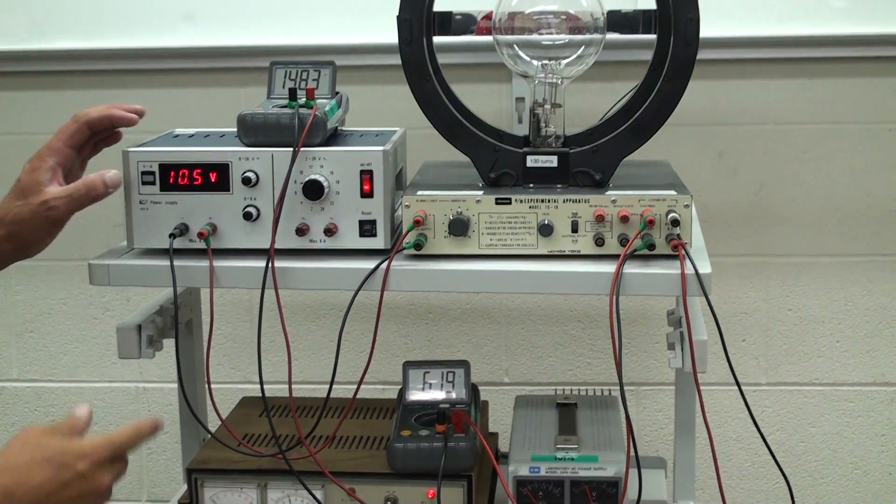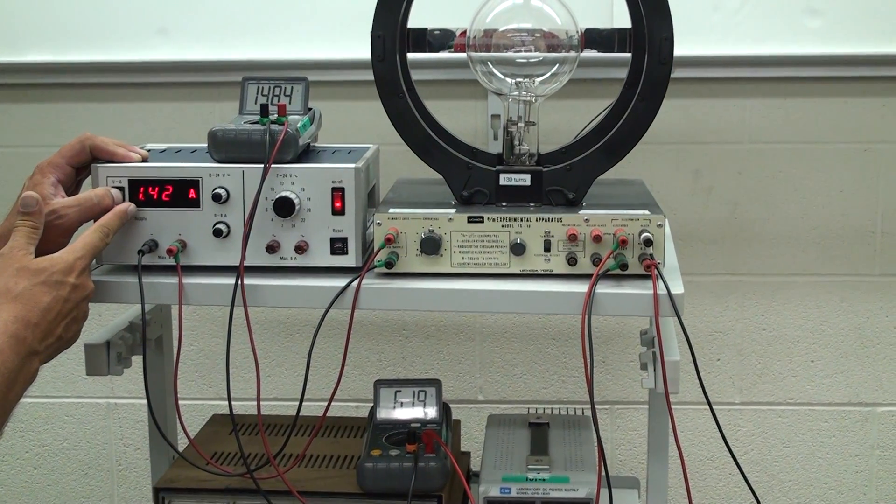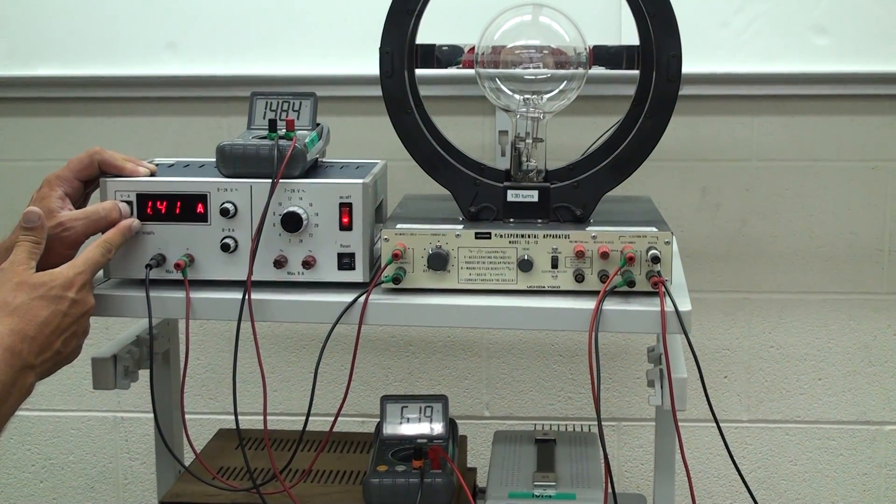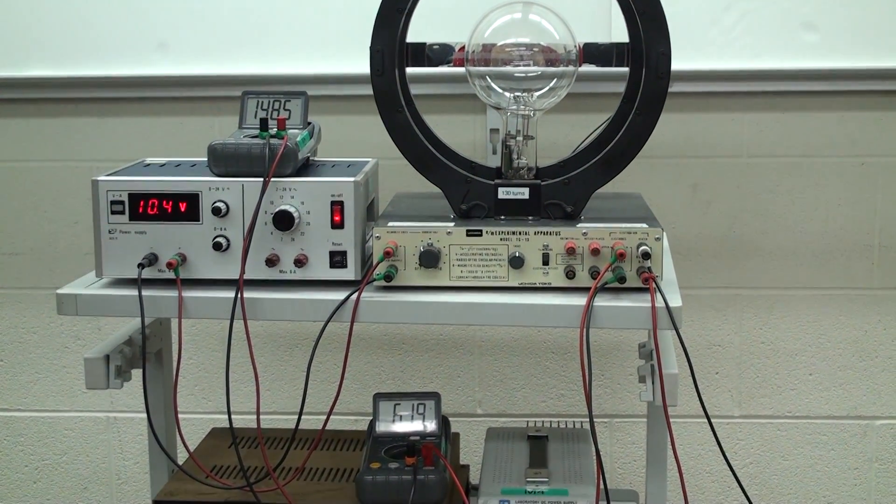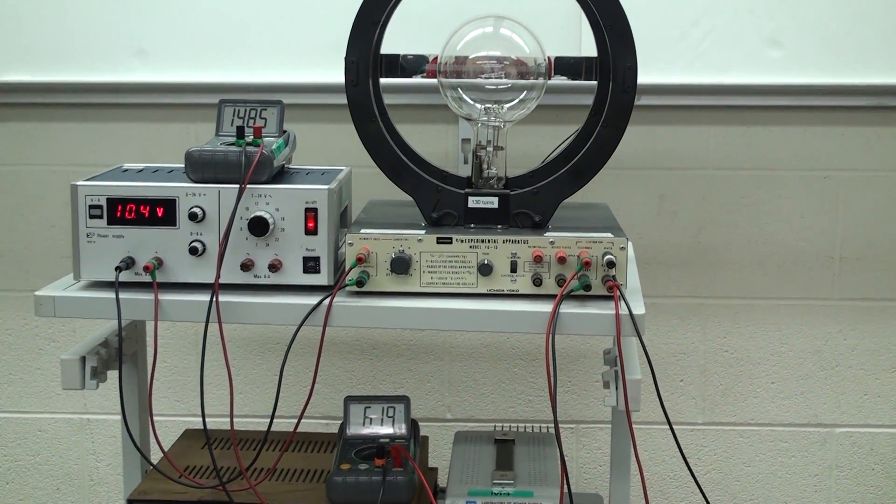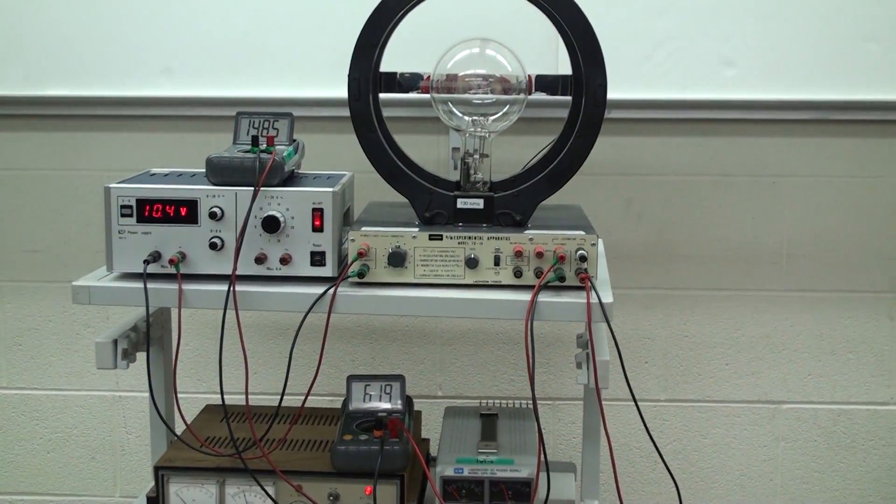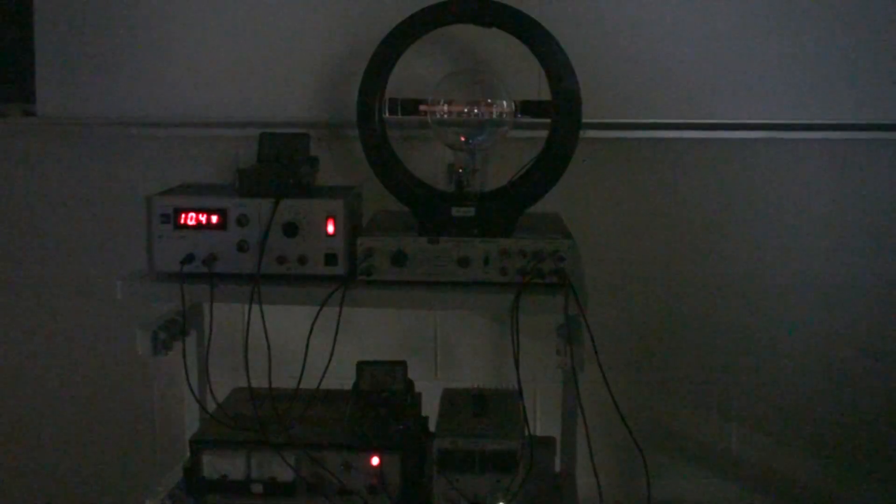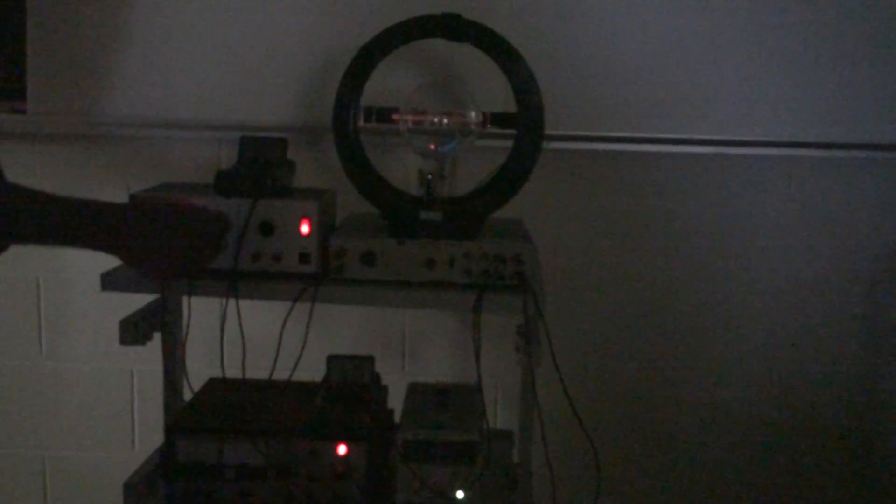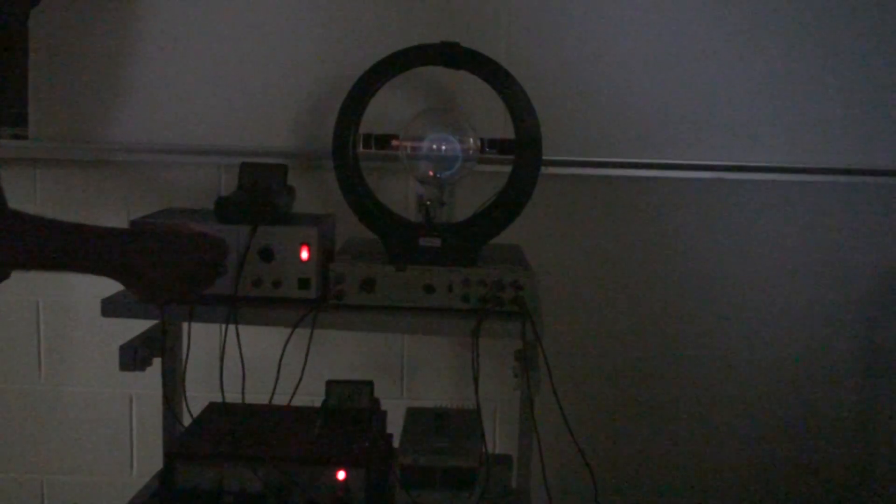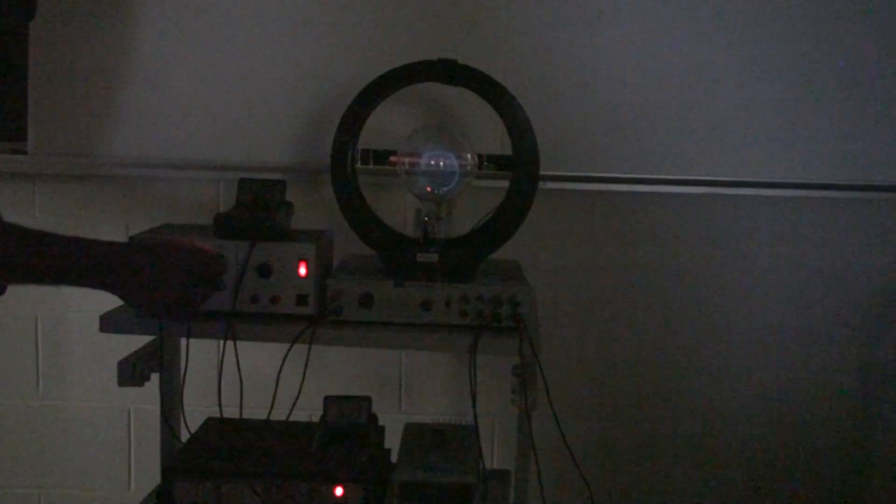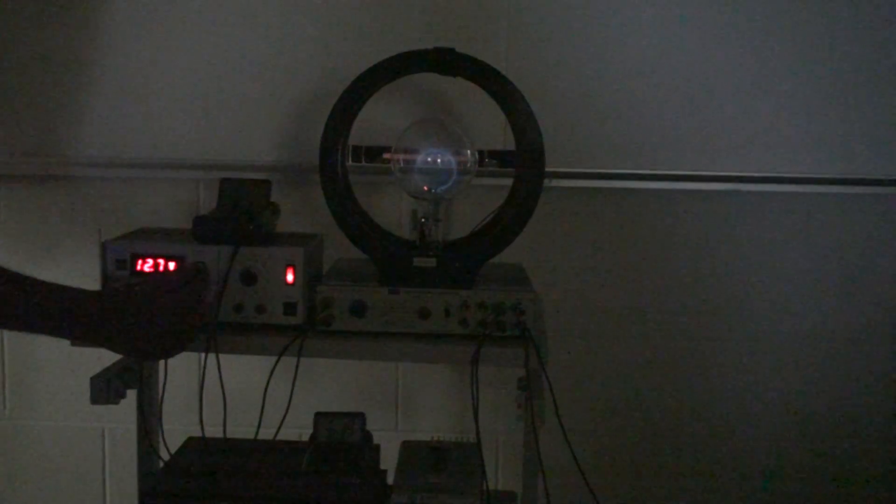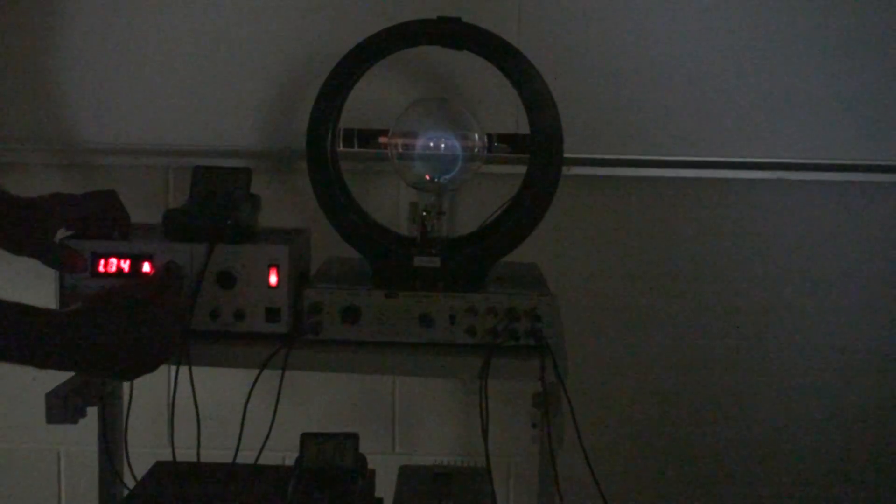Turn on the current through the two electromagnetic coils and turn it up until the electron beam circulates. The beam is visible because the electrons collide with mercury atoms inside the bulb, exciting them and causing them to glow as they do in a fluorescent bulb.